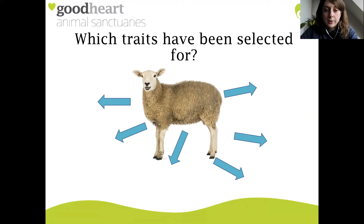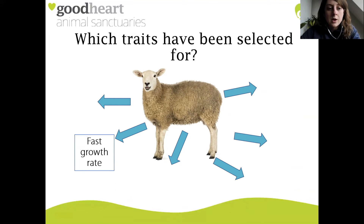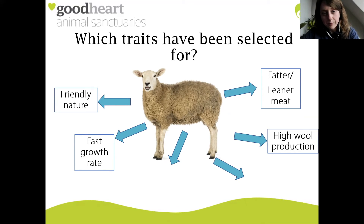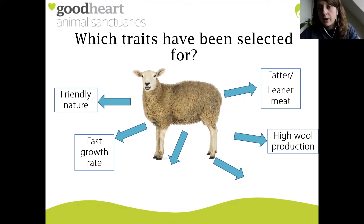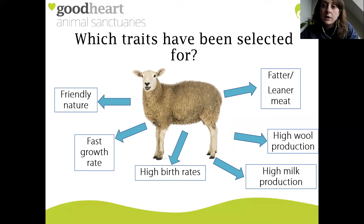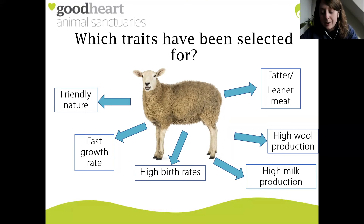Sheep. What have humans artificially selected for? Again fast growth rate, friendly nature, fatter or leaner meat as desired. There is also very high wool production - in years gone by we were incredibly reliant on sheep for their wool to produce clothing. We also feed off their milk, and modern sheep are having higher and higher birth rates. Modern ewes, rather than just having one baby as they typically would in the wild, are now having two, three, or even sometimes four lambs in one birth.